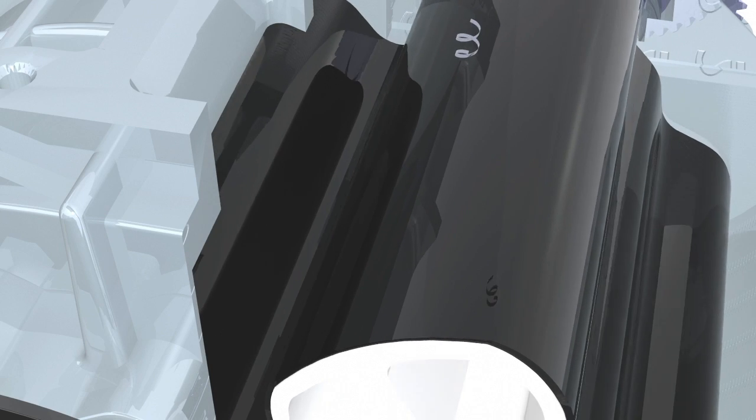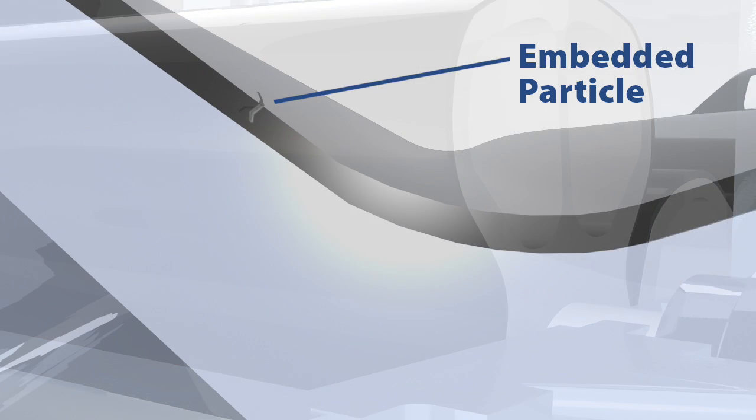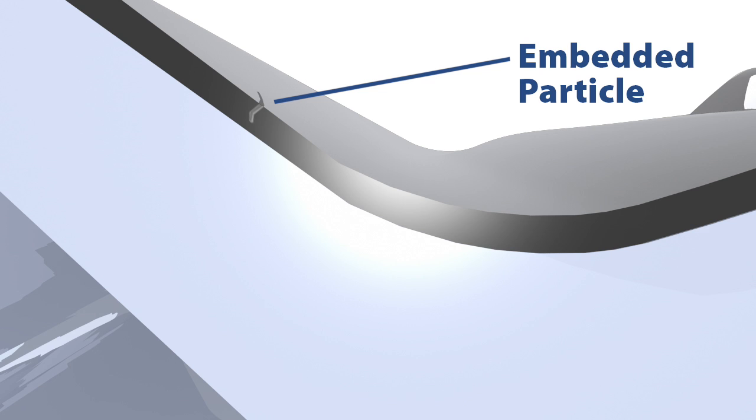Ogura rotors also have a special coating applied to the aluminum. This coating helps to maintain high efficiency. Any small particles that make their way into the air pump will embed themselves into the coating, preventing scraping of the housing, thereby maintaining high efficiency.